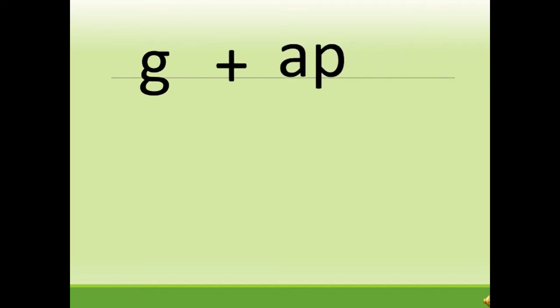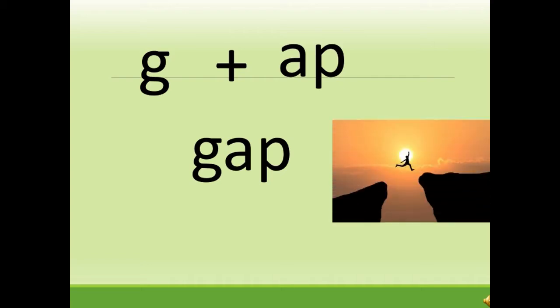Now let's move to the next word. Which letter can you see on the screen, children? You can see the letter G — correct! And G says 'g.' When we add 'ap' to G, so G plus ap, what do we have? Which word do we get? We have g-ap: gap — correct! And we are going to read it as g-ap: gap.